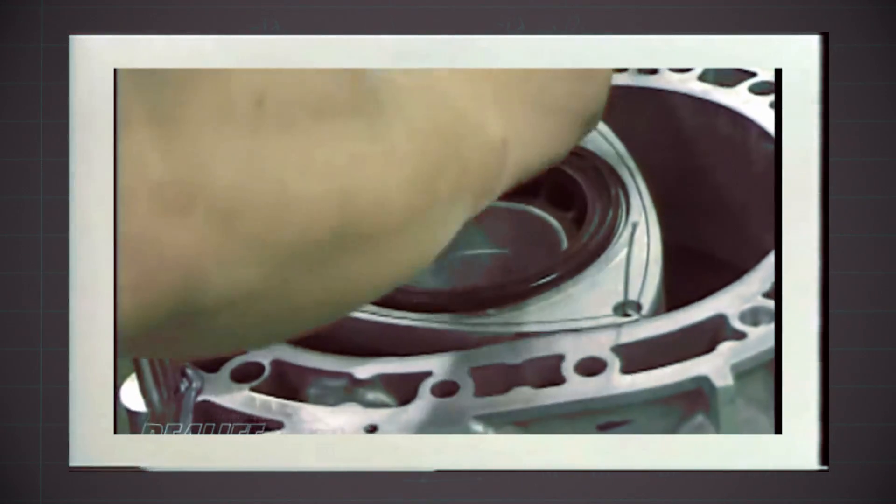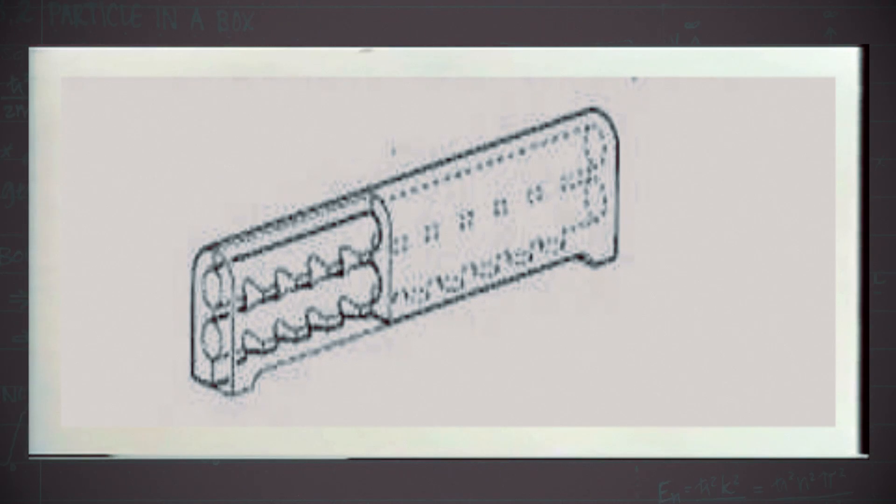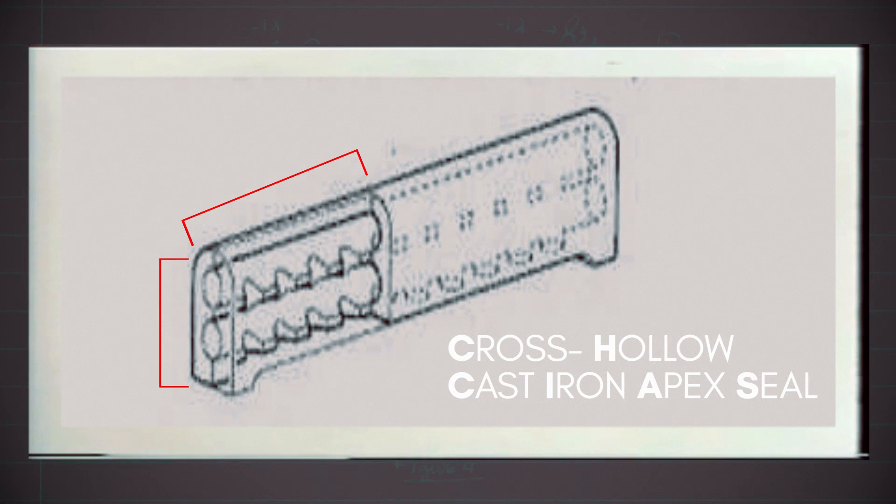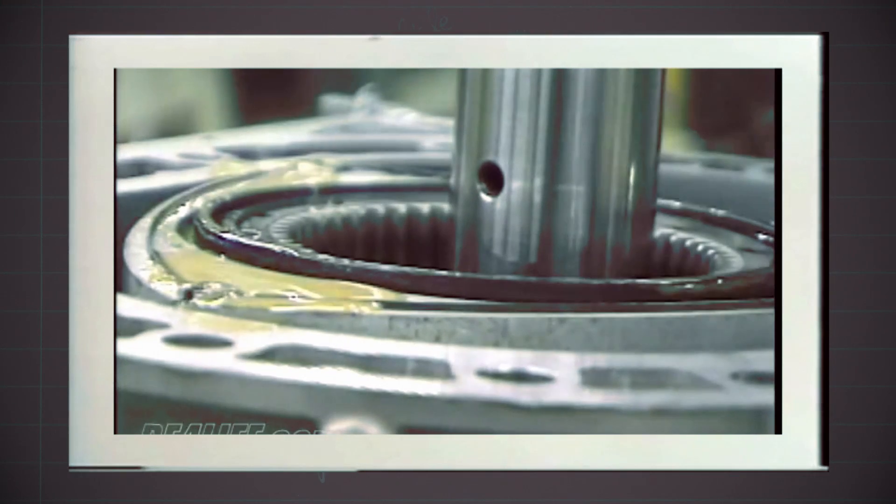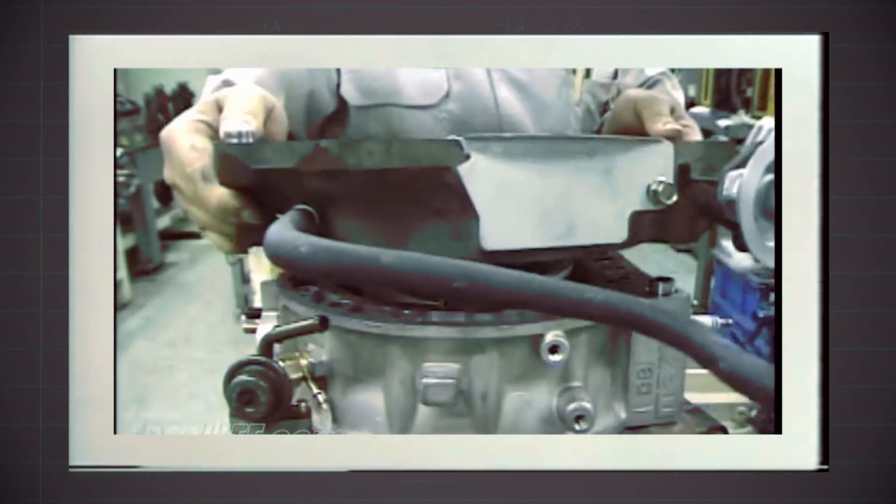Mazda's initial approach was through using ceramics, but later, their first breakthrough was achieved by using cross-hollow, cast-iron apex seals. This design had two longitudinal and several cross-perpendicular holes that assisted in reducing high frequency vibrations. The use of this design was later extinguished because of the complexity and high manufacturing costs.